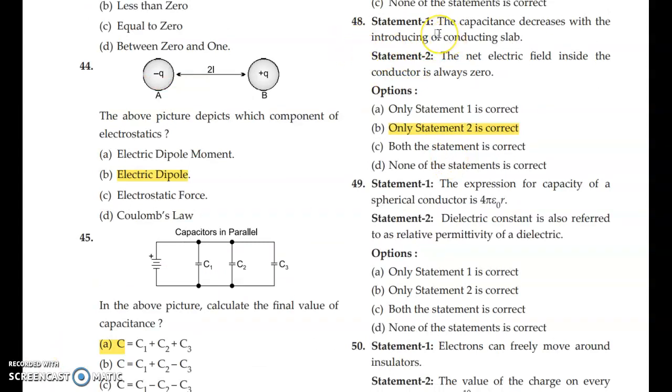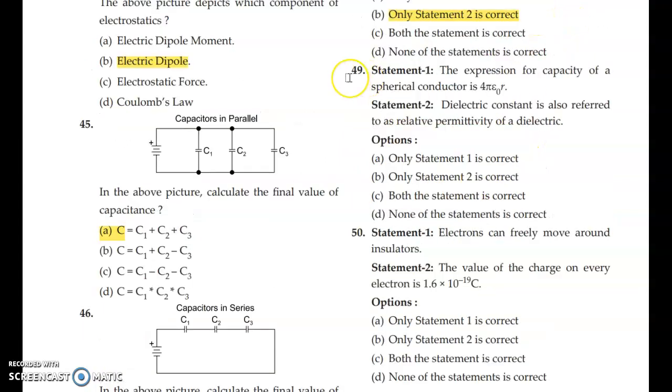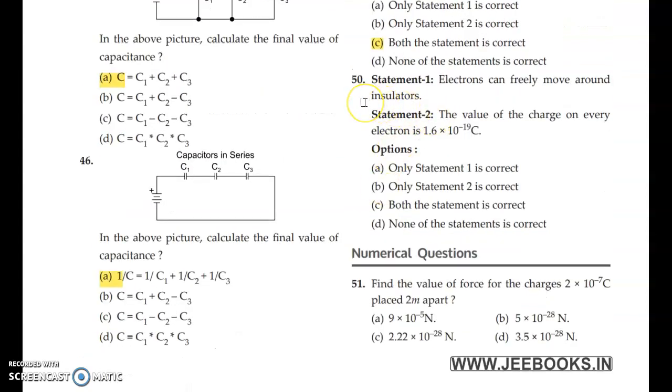Question 48: The capacitance decreases with introduction of conducting slab. The net electric field inside the conductor is always zero. In this case, only statement 2 is correct. The capacitance increases with introduction of conducting slab due to decrease in electric field between two plates. It was written decreases and should be replaced with increases. The expression for capacity of a spherical conductor is 4 pi epsilon not r. The dielectric constant is also referred to as relative permittivity of a dielectric. Answer is option C, both statements are correct. Electrons can freely move around insulators. The value of charge on every electron is 1.6 into 10 to the power minus 19 coulombs. Answer is option B.